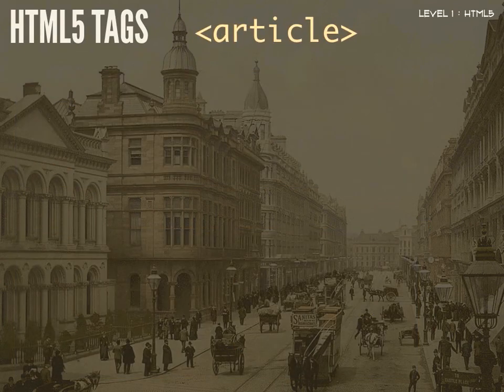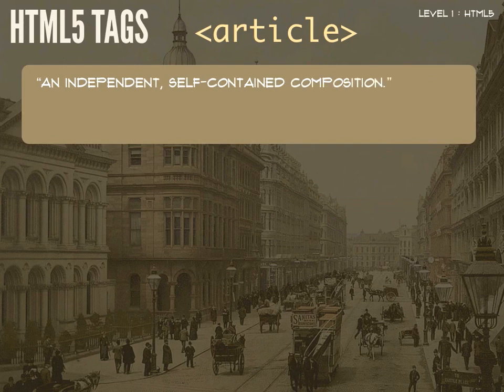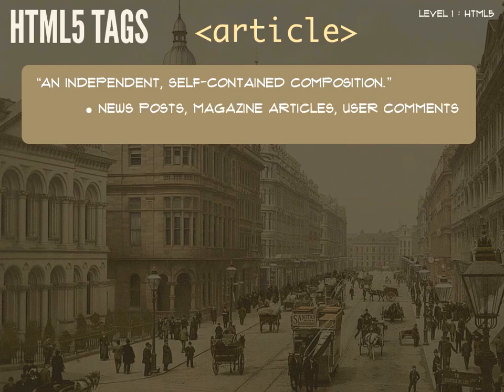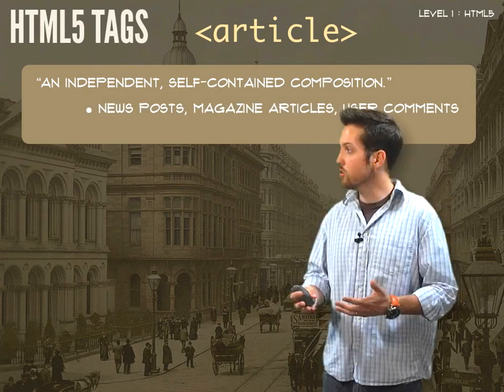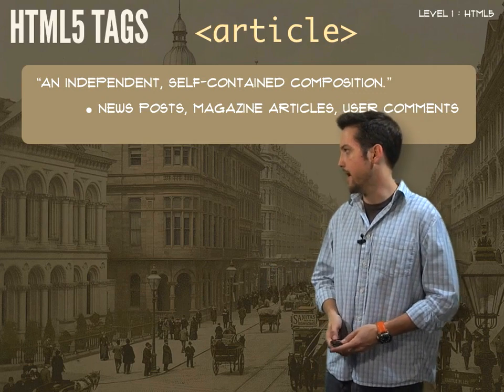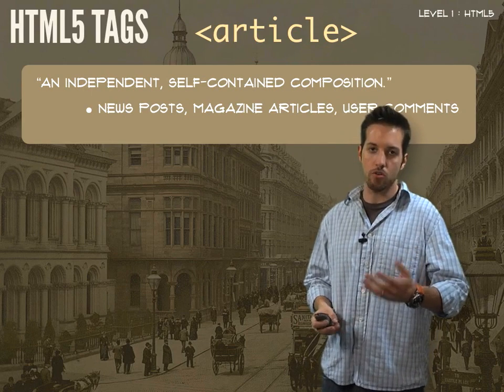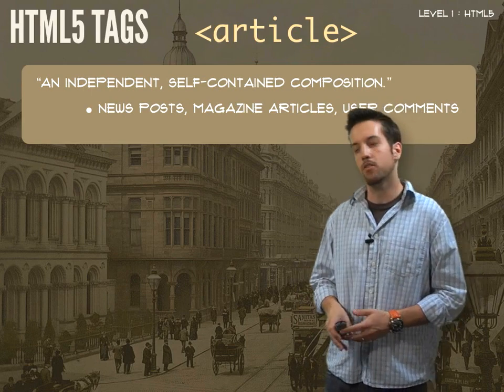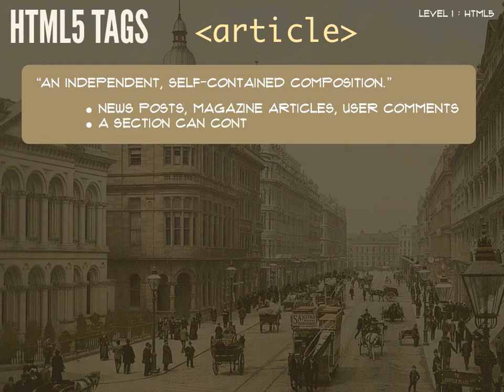So now let's look at the article tag. The article tag in HTML5 is defined as an independent, self-contained composition. These could be news posts, magazine articles, user comments — the article is essentially an article or a news posting. Now, what's the difference between an article and a section? A section can contain multiple articles. Remember, a section is a grouping of related content, whereas an article is independent.